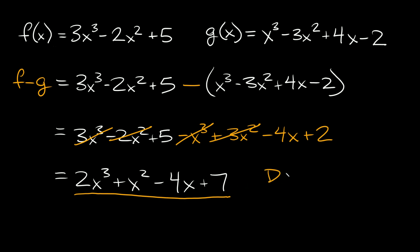Now let's figure out what the domain is. Looking at our two original functions — one is a trinomial and the other is a longer polynomial — in either case, both of them don't have anything unusual like fractions, radicals, or logs. So x can be any positive or negative number, meaning the domain is all real numbers, written as ℝ or from negative infinity to positive infinity.